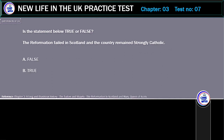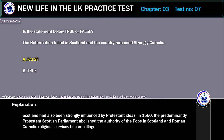Is the statement below true or false? The Reformation failed in Scotland and the country remained strongly Catholic. A. False. B. True. Correct answer: False. Explanation: Scotland had also been strongly influenced by Protestant ideas. In 1560, the predominantly Protestant Scottish Parliament abolished the authority of the Pope in Scotland and Roman Catholic religious services became illegal.